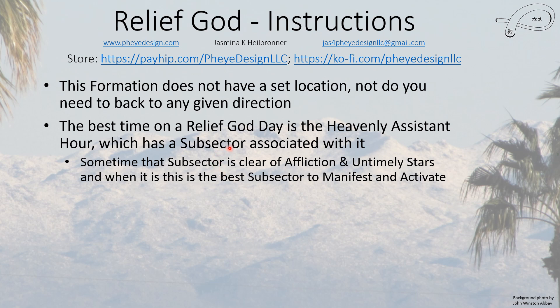Sometimes the subsector where you have the heavenly assistant is clear of afflictions and untimely stars. When this is true, it is the best sector to do both the manifestation and the activation. I tell people in my monthly videos if that subsector is clear of afflictions and untimely stars, but I can only tell you things that apply to everybody — the annual afflictions and the annual and monthly stars. You need to know your flying star chart and your purple white chart to know whether that sector is good to activate. You don't want to activate it if it has really untimely stars, especially star five, star seven, or star three, which are also quite untimely in period nine.